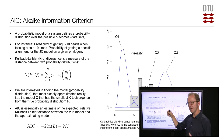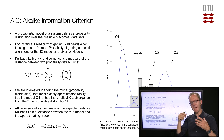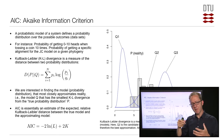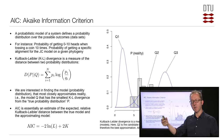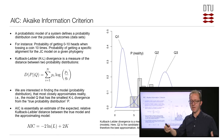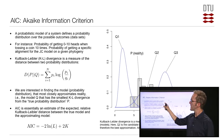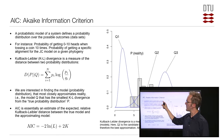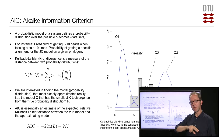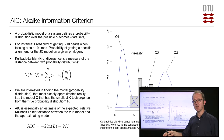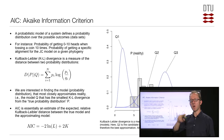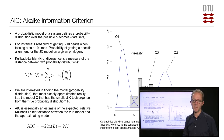Having a probabilistic model of some biological system means that you have defined a probability distribution over the possible data sets, over the possible outcomes.